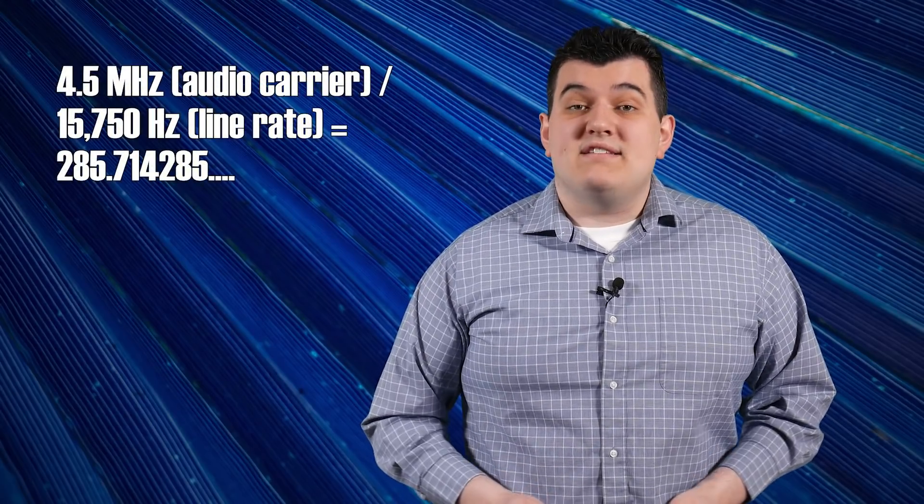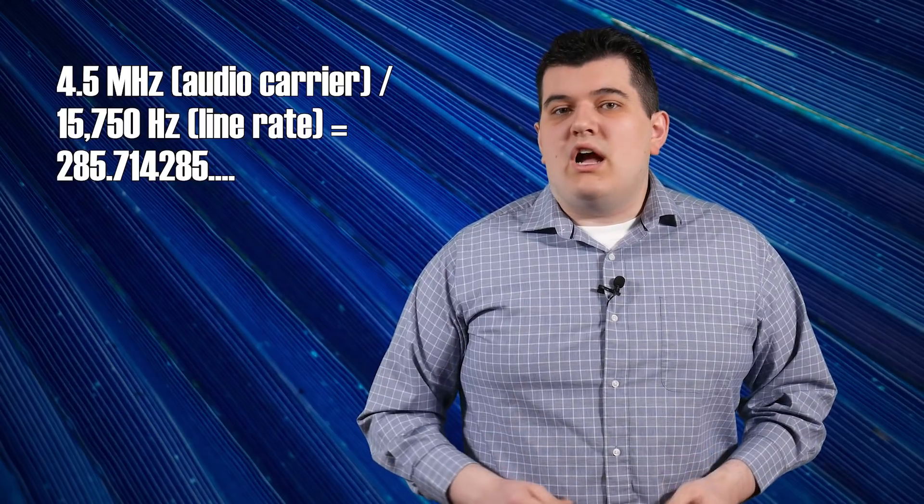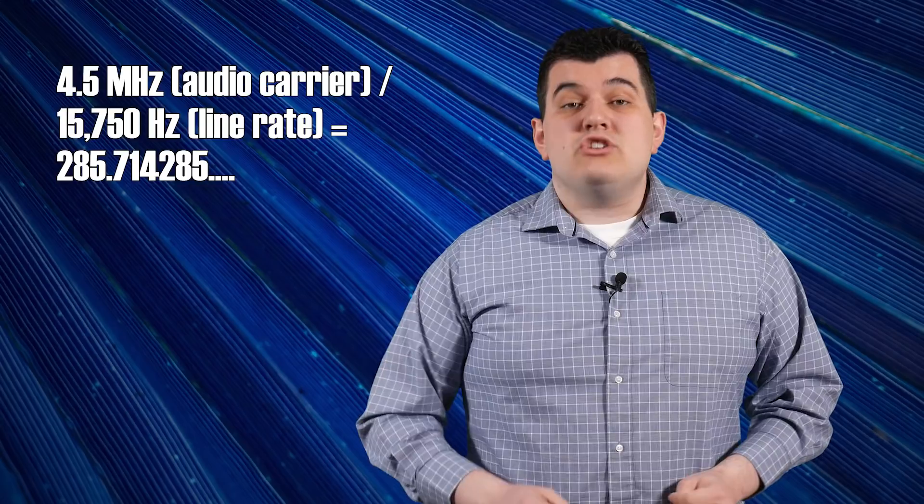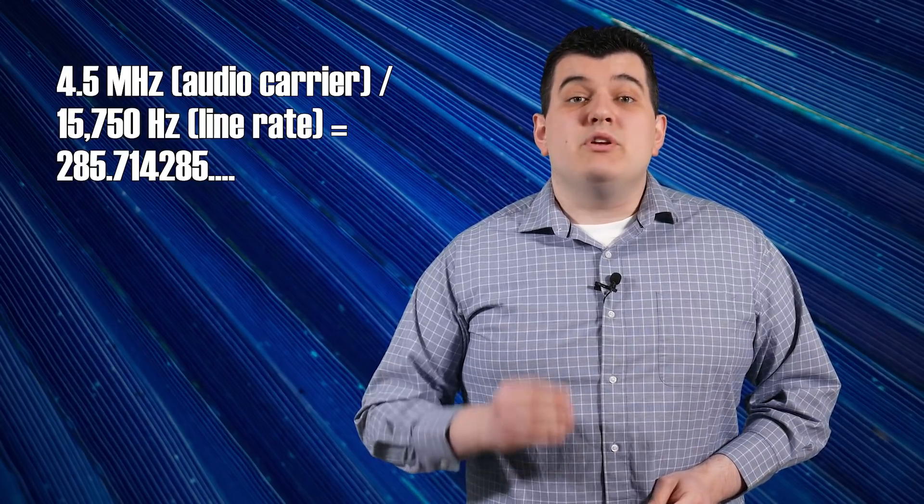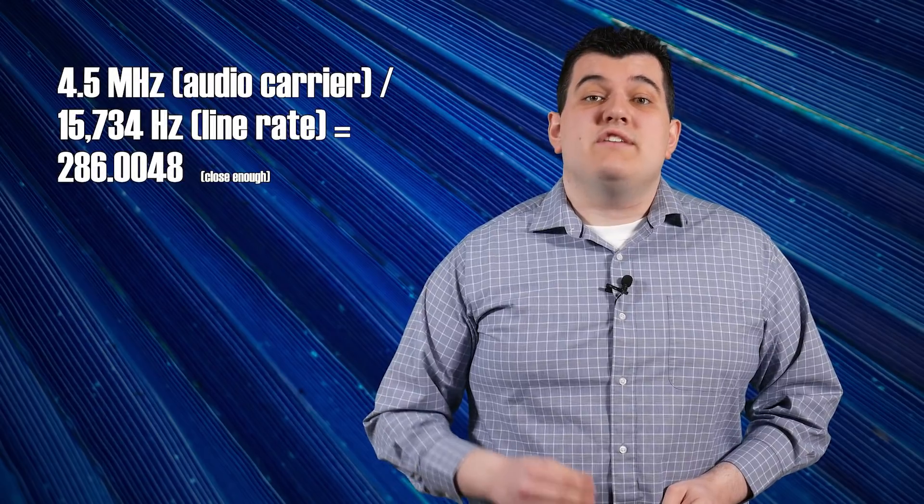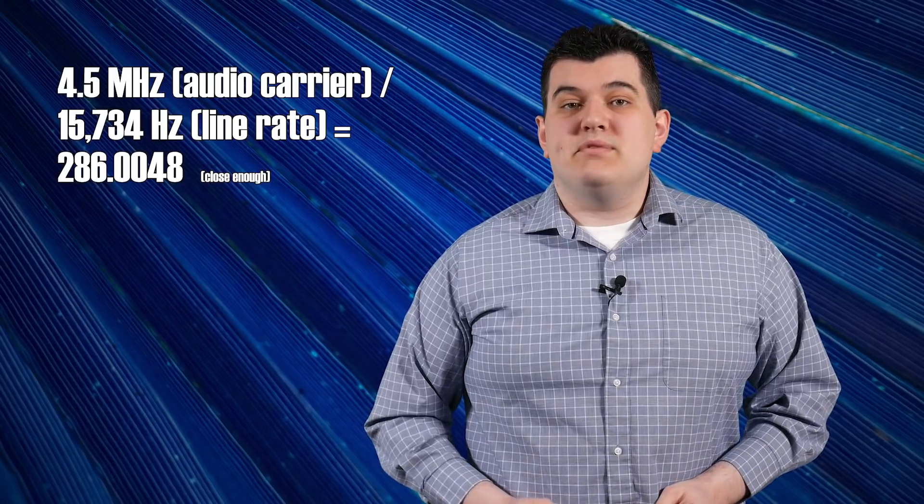You couldn't just change the audio carrier though, because that would mess up existing TVs, but you could change the line rate or frequency. By reducing the line frequency from 15,750 Hz to 15,734, the audio carrier was now exactly 286 times the frequency of the line rate, rather than some nasty number. This would minimize interference and prevent the dot pattern from occurring.